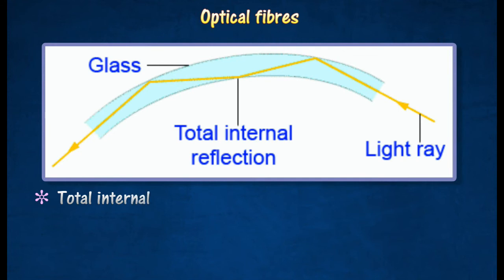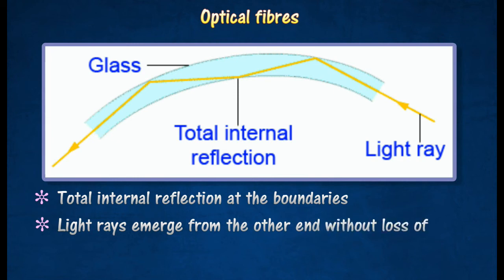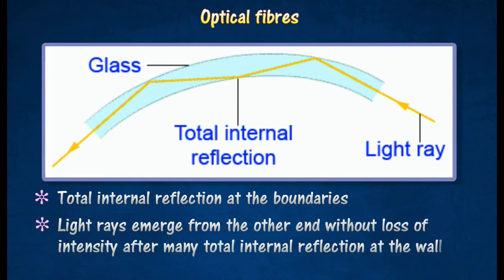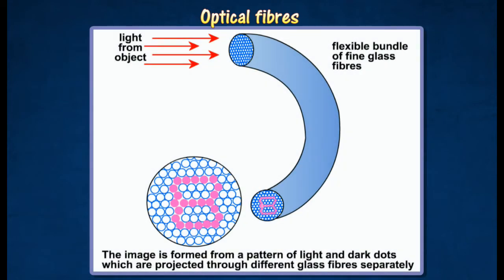Light rays entering the interface between the two glass surfaces at angles of incidence greater than the critical angle undergo total internal reflection. After many repeated total internal reflections at the walls, the light rays emerge from the other end without loss of intensity. A bundle of parallel fibers is used to construct an optical transmission line for transferring the image of an object from one point to another.